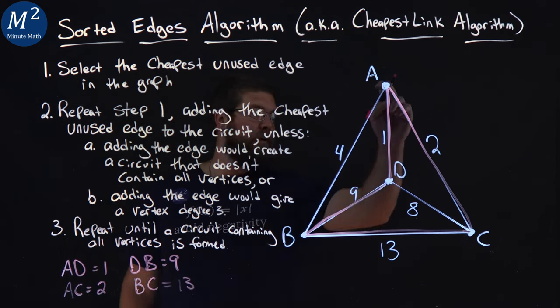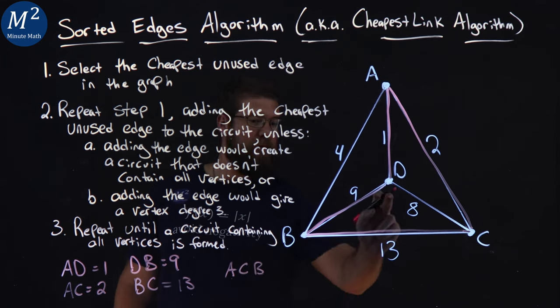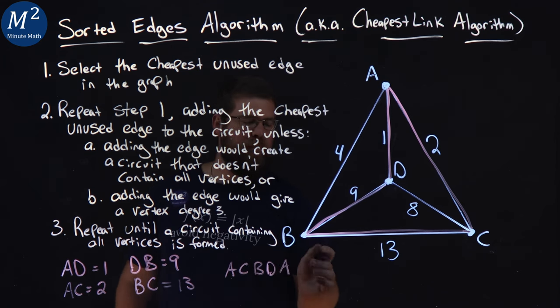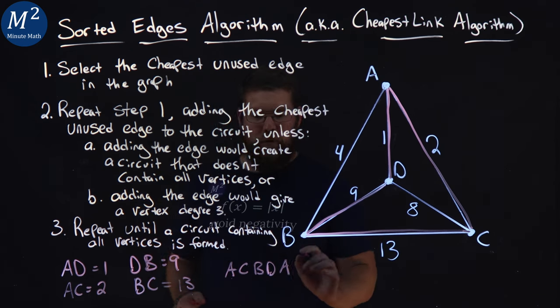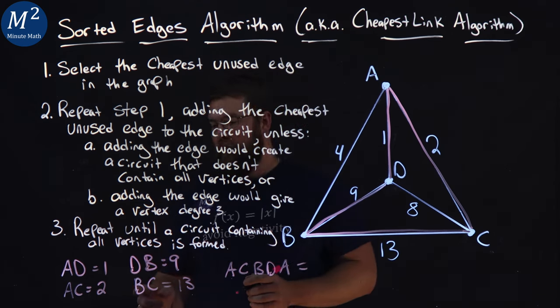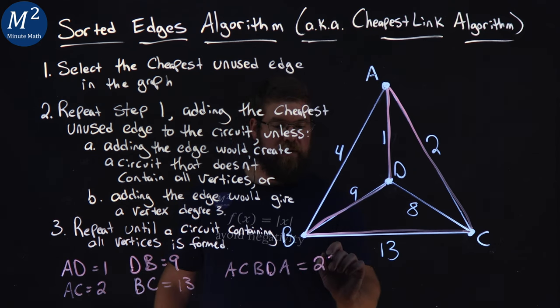Our path here could be A, C, B, D, A. There's many ways on this circuit. Because there's a circuit, you can start from any one of them. And that has a total weight, if we add all this up, 25.